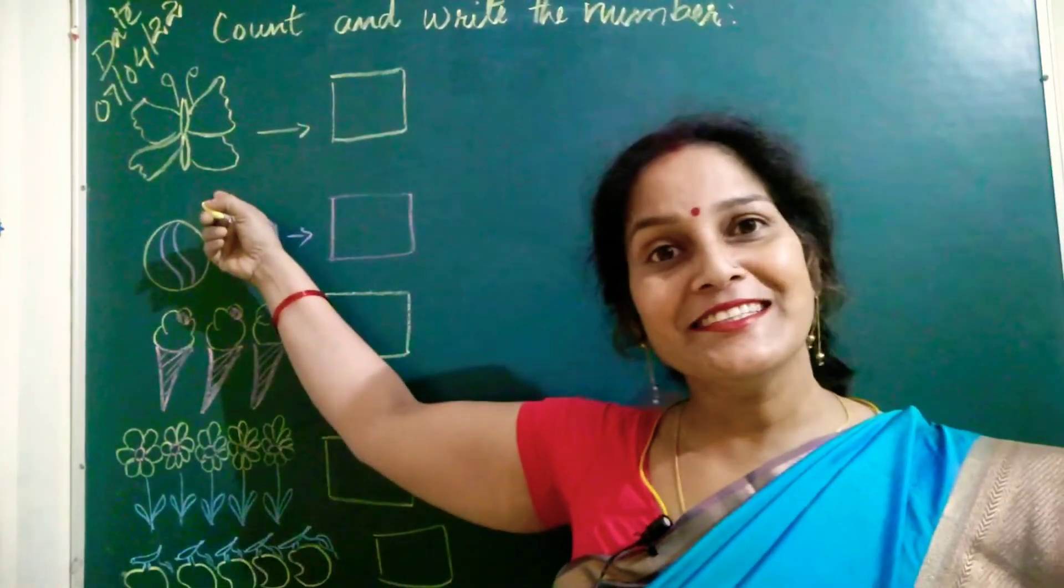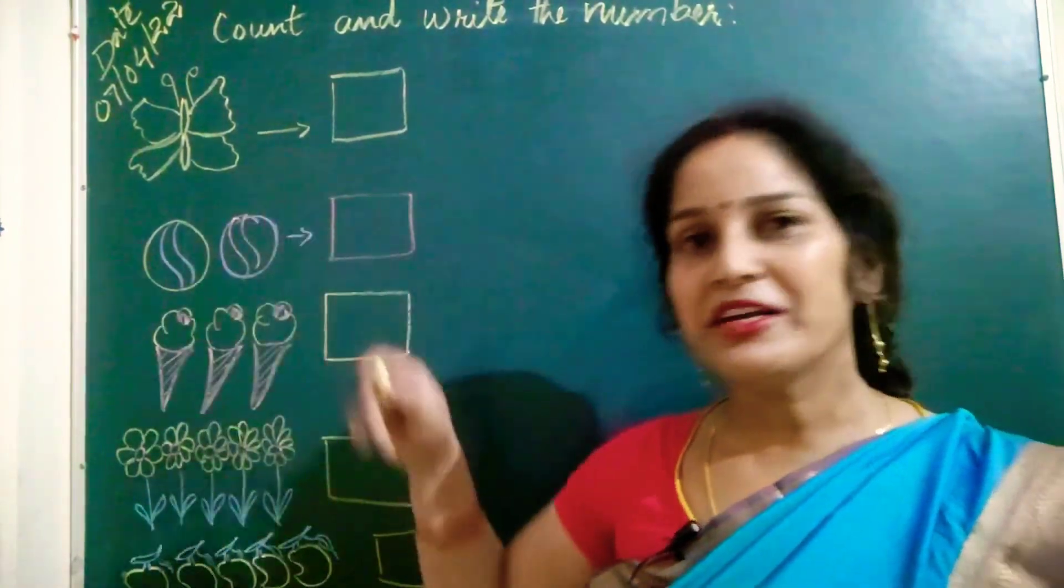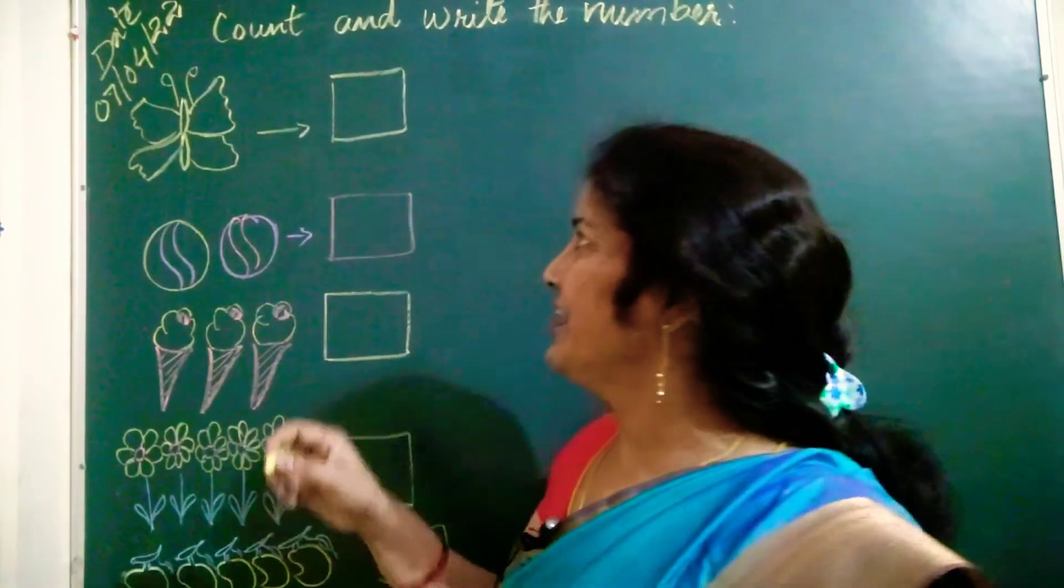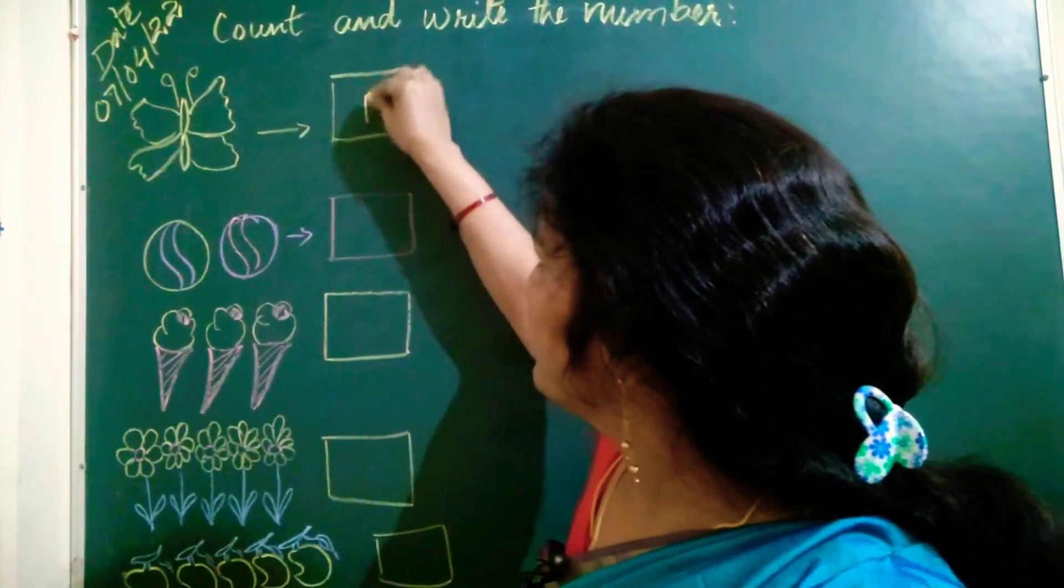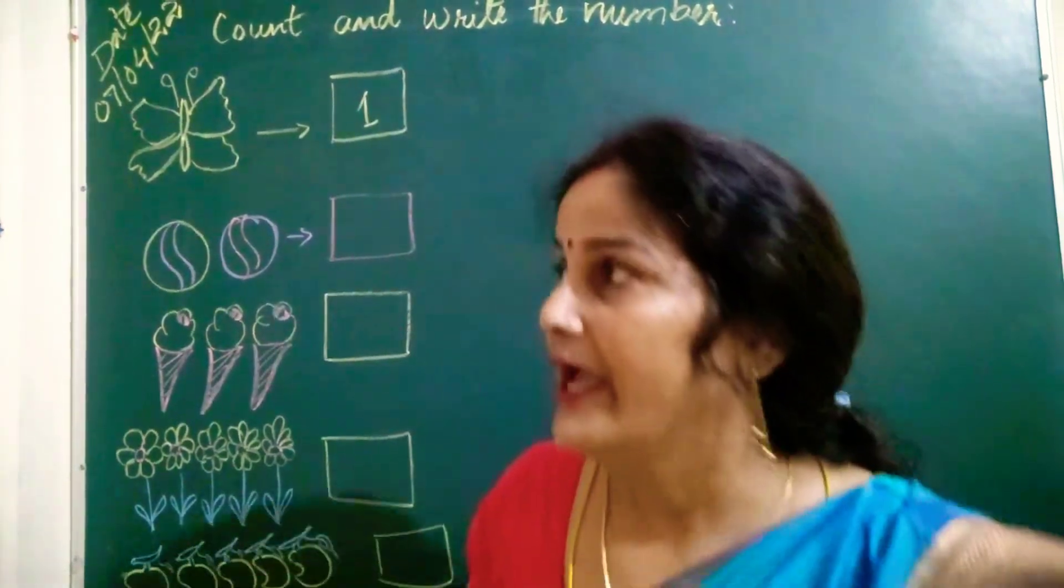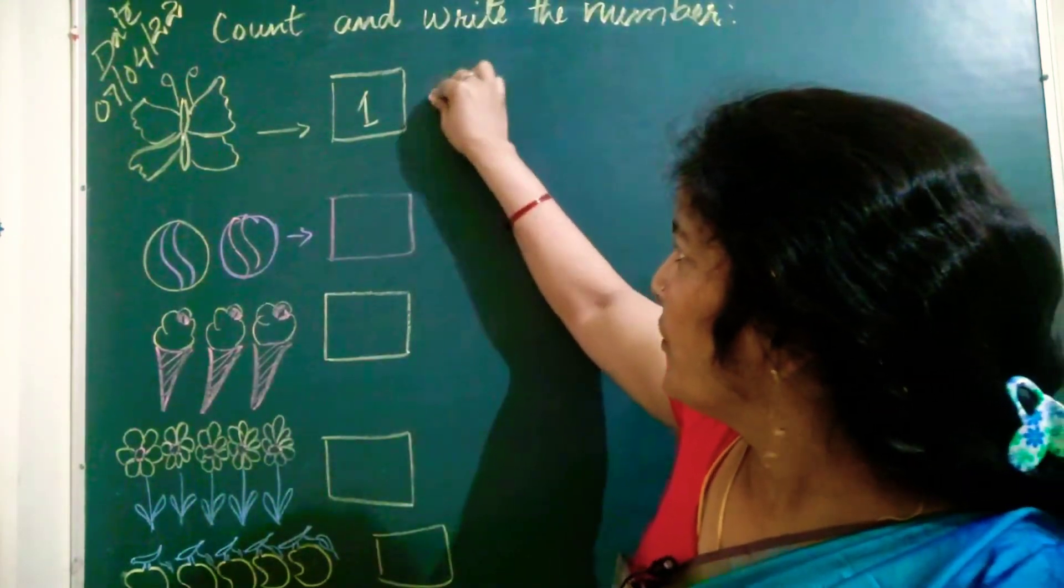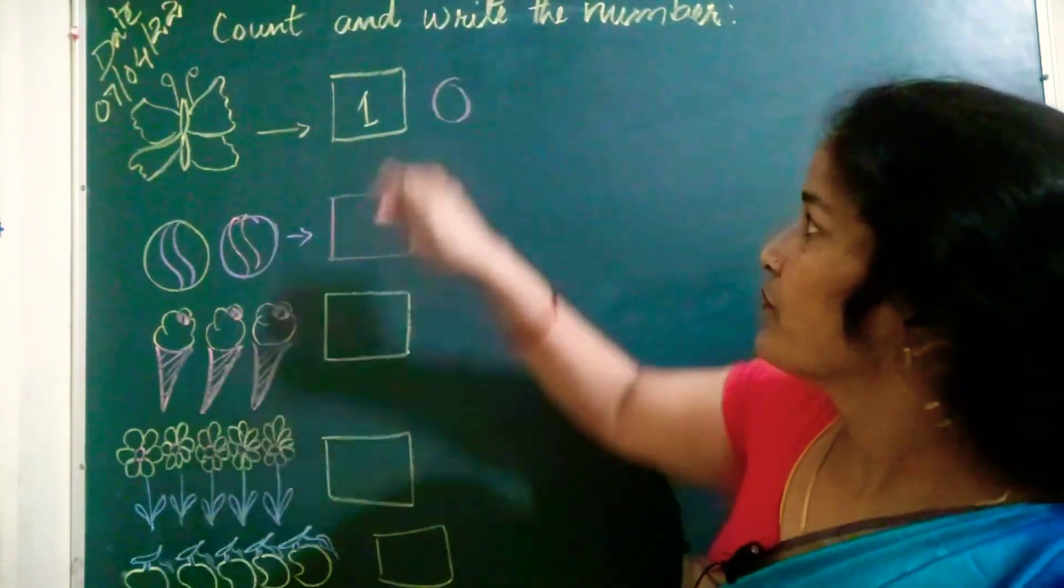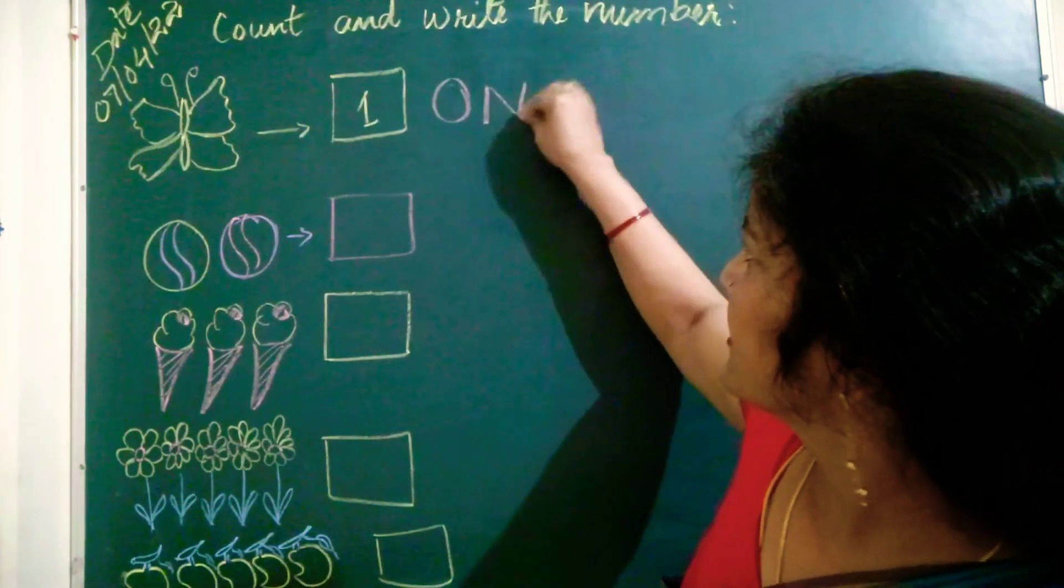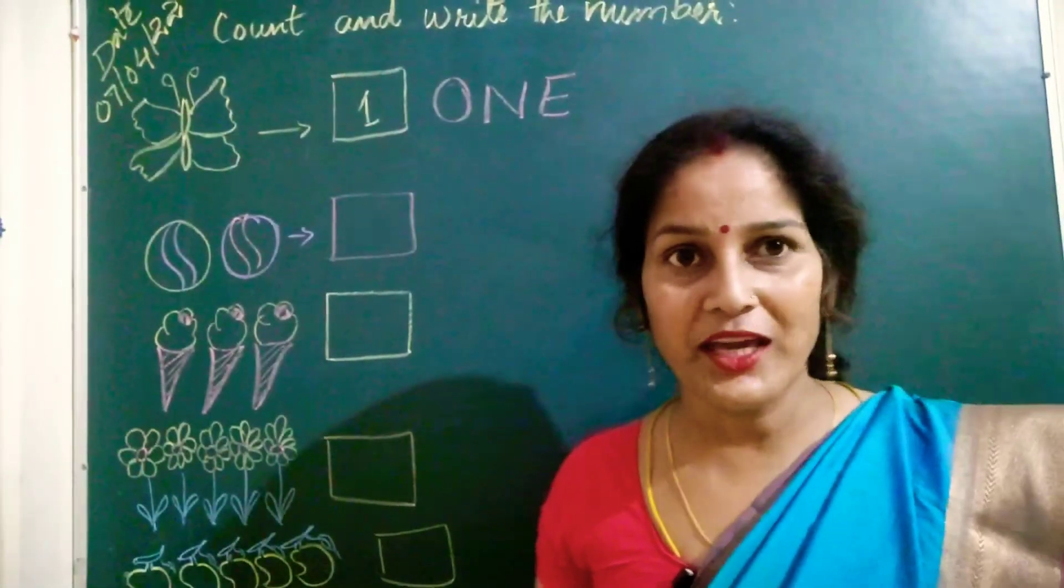What is this? Butterfly. So how many butterfly is here? Kidnye butterfly hai? One. Very good. So we will write here one. And what will be the spelling of one? One. O. N. And E. One.